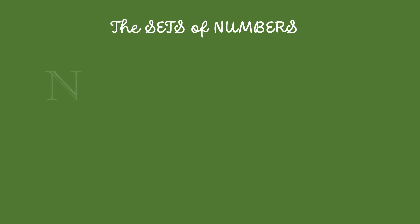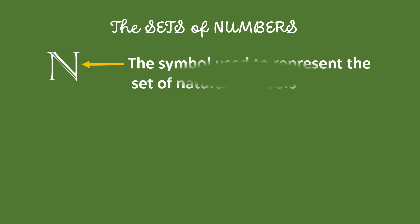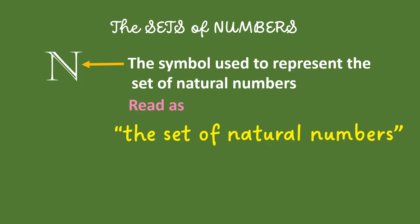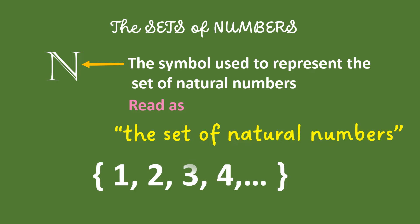The sets of numbers. The capital letter N represents the set of natural numbers. When you see this symbol or this letter in a mathematics book, you read it as the set of natural numbers. Examples of natural numbers are 1, 2, 3, 4, until infinity.